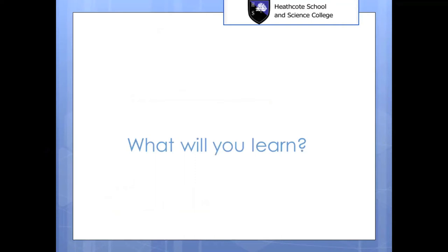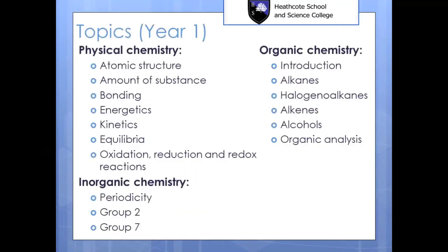So what will you learn in your A-level course? In the first year, a large amount of the course is made up of areas you've already studied in GCSE, but we go a little bit deeper and look at some additional things as well. One of the key differences between A-level and GCSE chemistry is that in GCSE you learned what things are — what reactions happen — but in A-level you'll be learning why. The question 'why' will be on your mind throughout your entire A-level course.